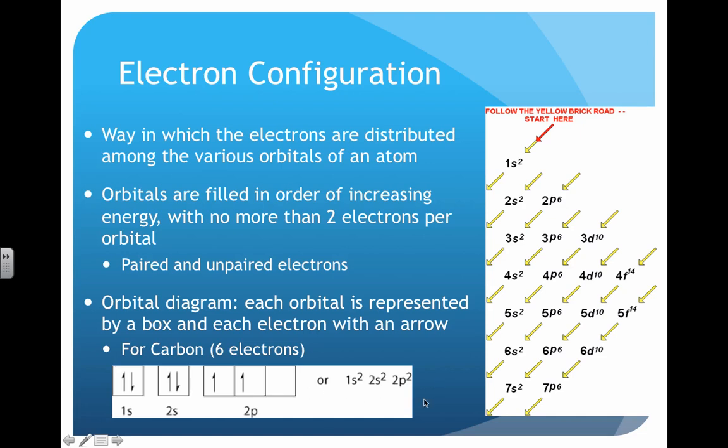1s represents the orbital, and the superscripted number represents the number of arrows or electrons within that sublevel. For carbon, we have 2 in the 1s, then 2 in 2s, and because there are only two electrons left and 2p comes next, that's where the 2p2 goes.